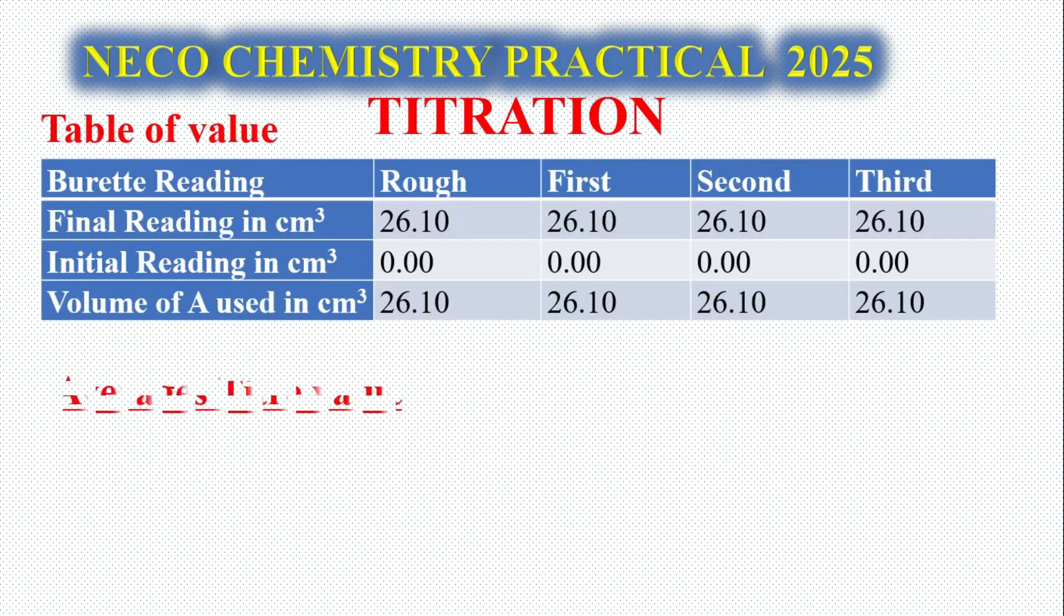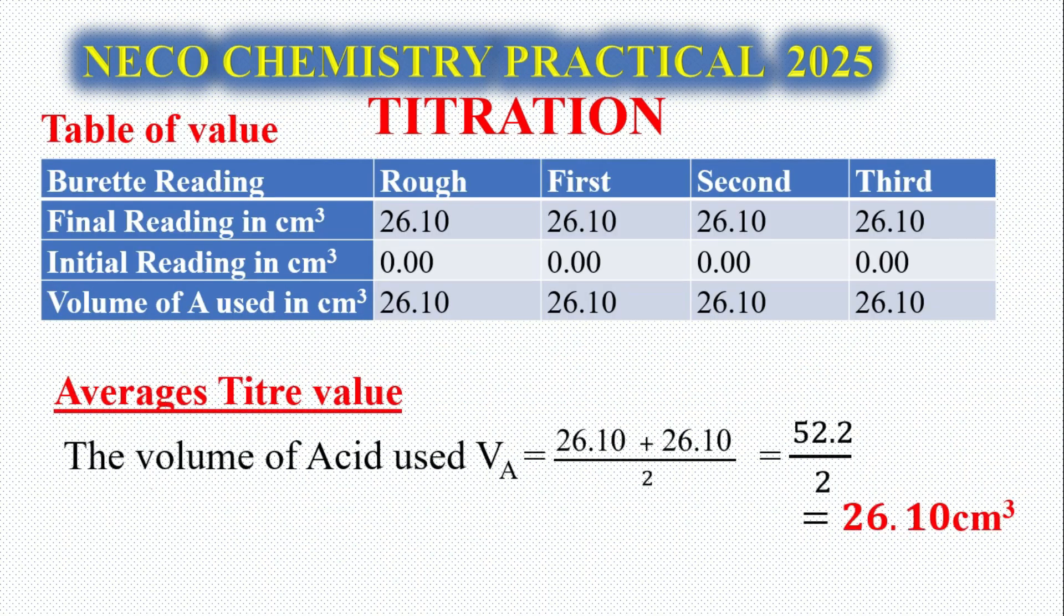Look at the expected titre value. As we arrived from our calculated value, we are going to be using 26.10 all through this video. If you don't understand how to mark the table, just refer to this video I posted so you know how to prepare your table. I'll be using first and second readings: 26.10, 26.10, giving an average of 26.10.